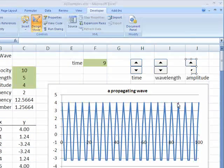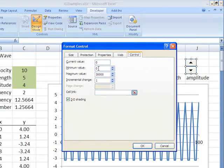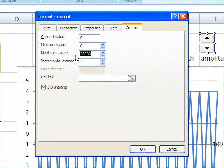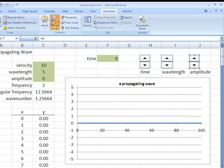And lastly, our amplitude. We'll take minimum value of zero. That's fine. We'll make the maximum value of ten. Incremental change still one. Cell link. The amplitude is C5. I can type C5. Or since I've named it A, I'm just going to type A. Now we're done.